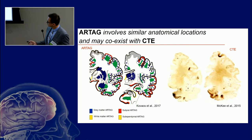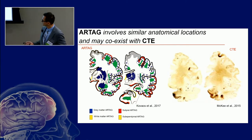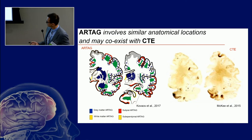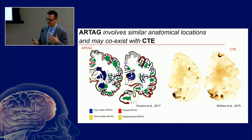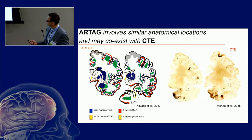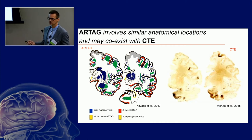In a study performed with the University of Pennsylvania with John Trojanowski's group, I went through around 700 cases of all kinds of diseases, and these are the locations where we documented these types of astrocytes.